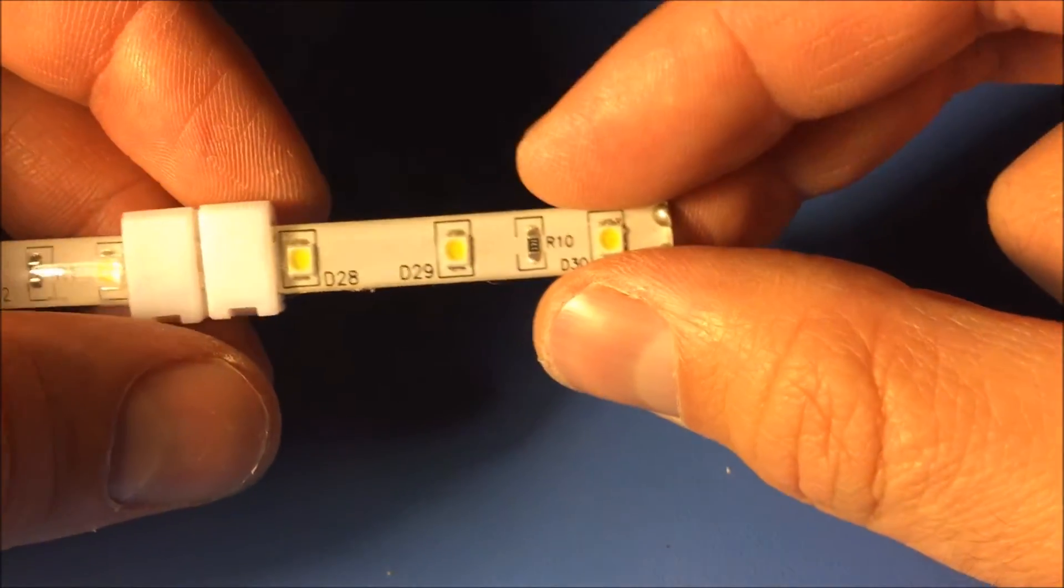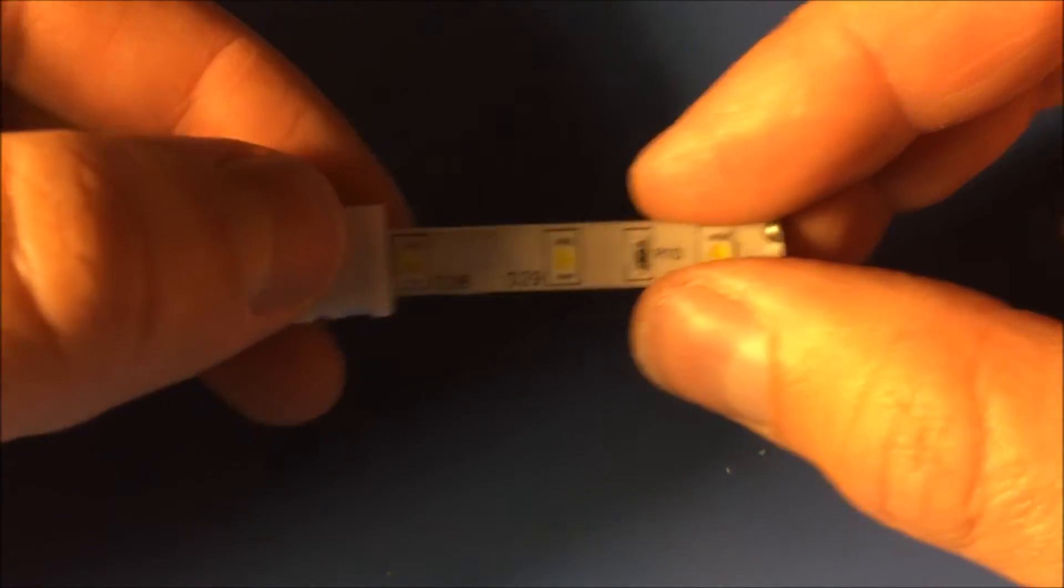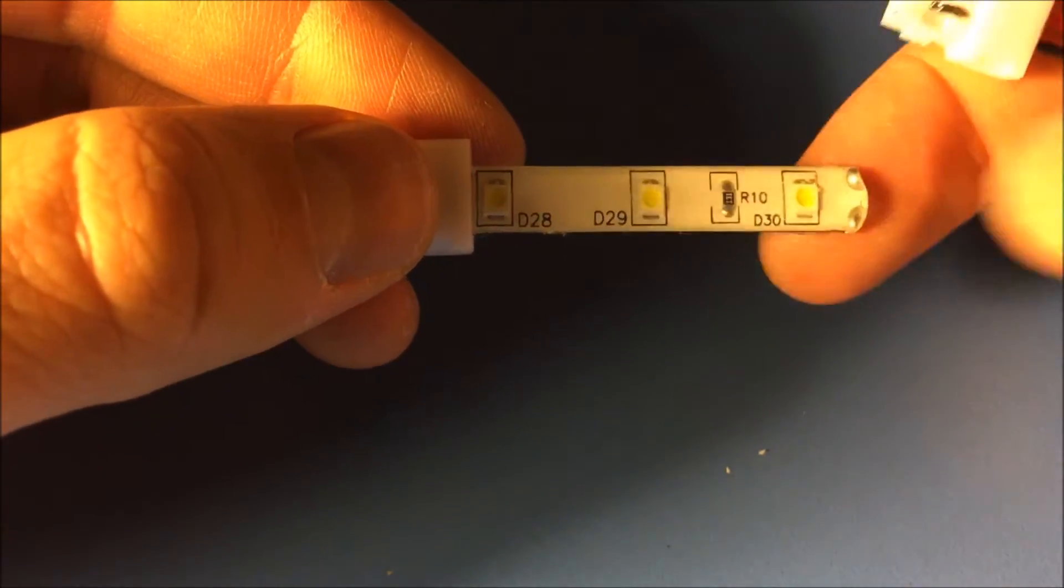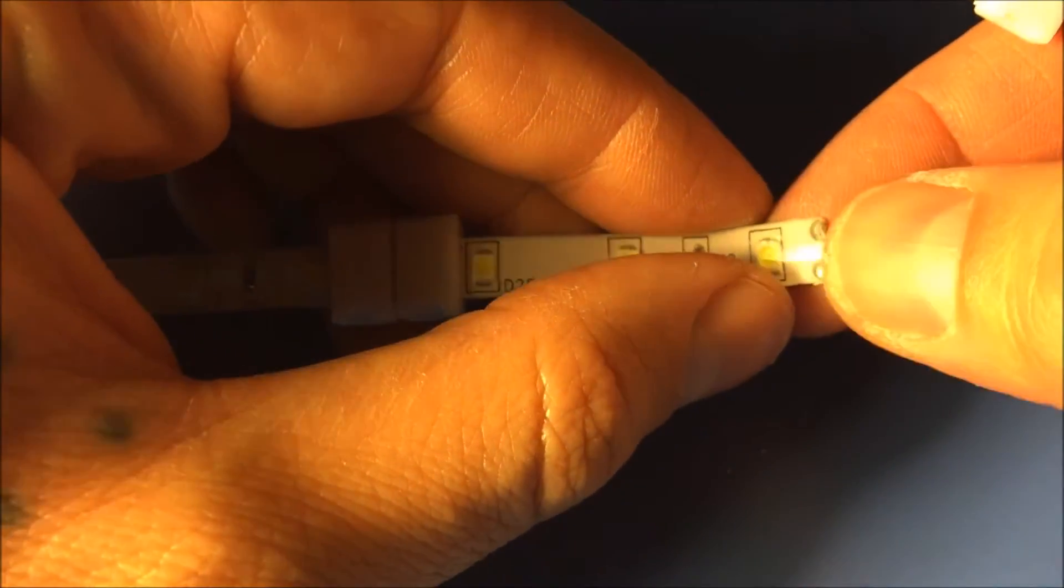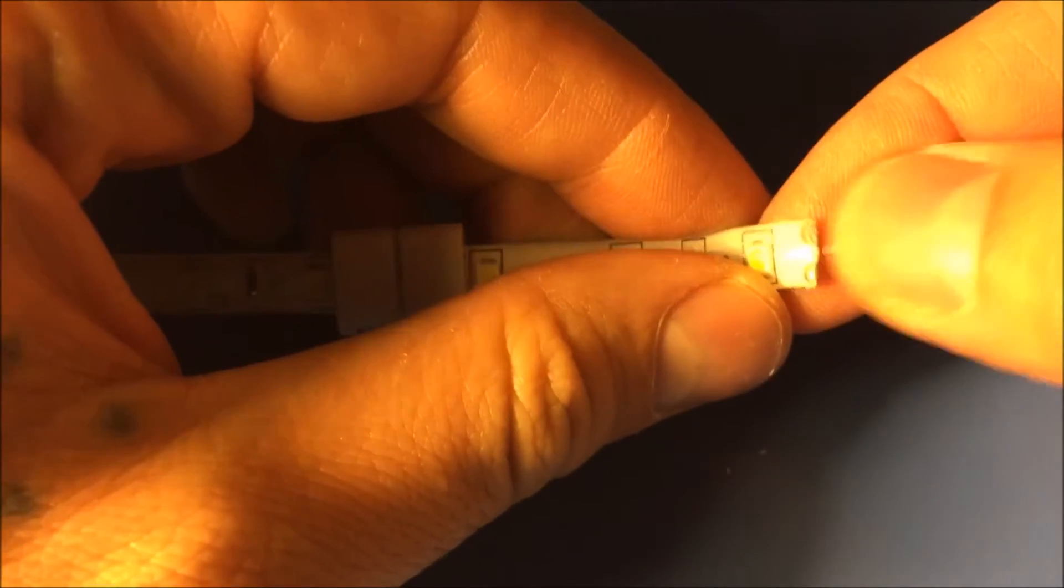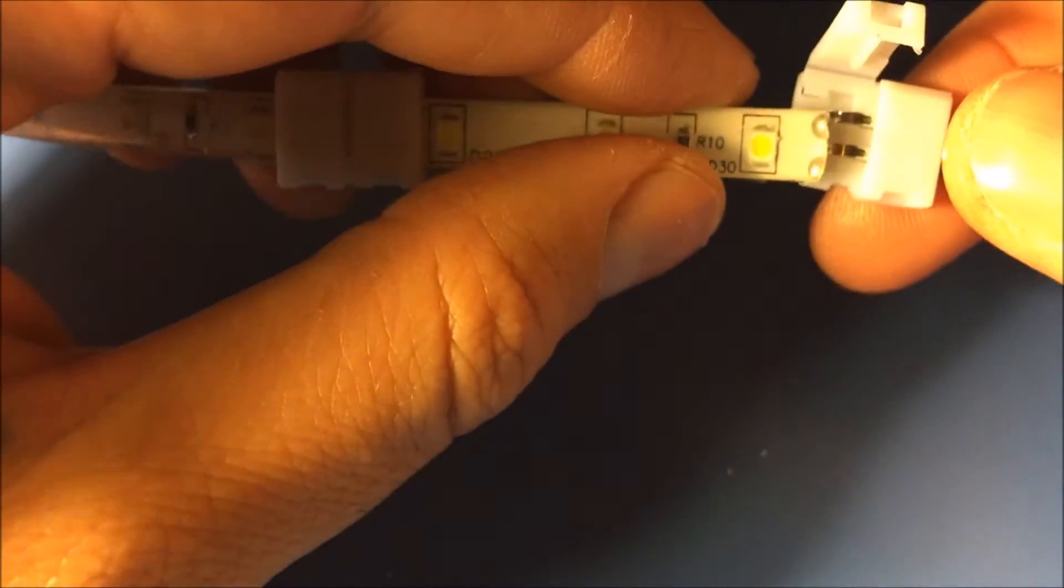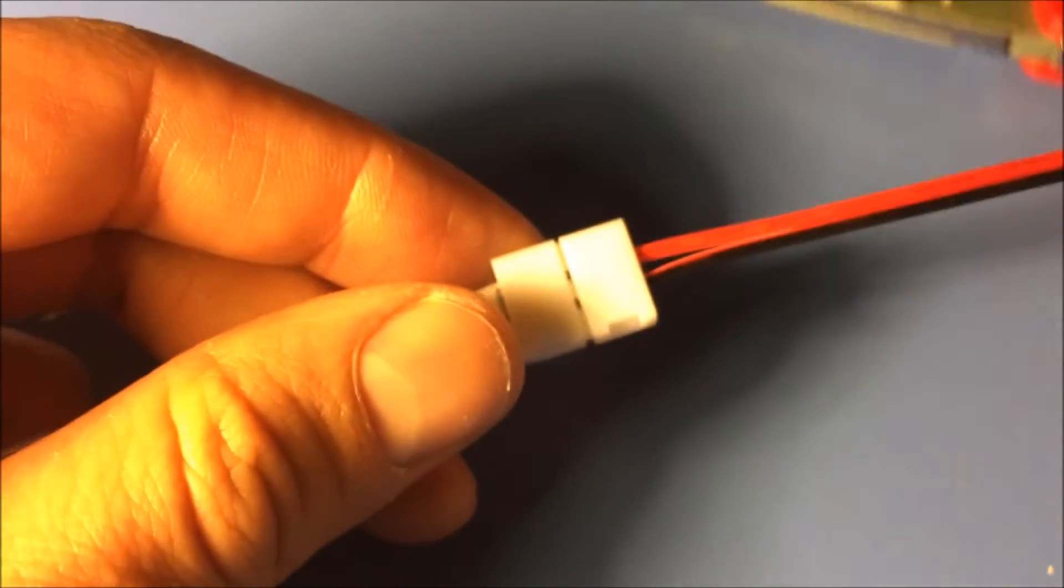You can see it on the LED strip. This is the positive side. It's going to be like this. I'm going to remove the water protection layer here. It's going to look something like this.